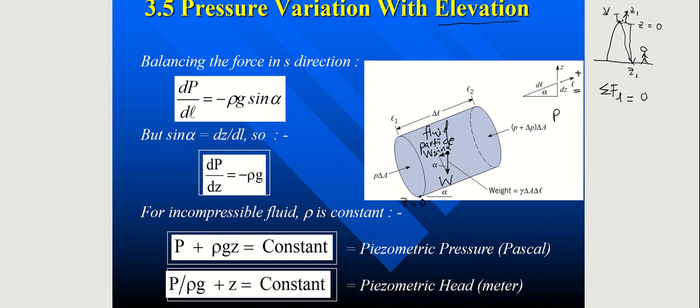So therefore, P delta A is positive. While P plus delta P times delta A is negative because it's going to the other side. Pressure force must be towards the body.